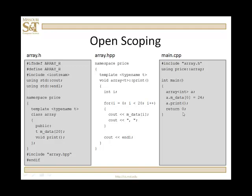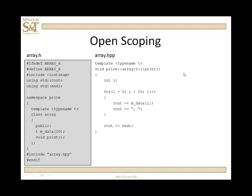Here I have a templated array class defined inside the price namespace. I'm using indirection — I'll pound-include array.h to get the implementation of the templated code for the print function, which is also in the price namespace. Over in main, I pound-include array.h and tell the compiler I'm using the price array. Then when I refer to array, it knows which array to grab. Alternatively, the HPP file can simply specify that this is for the price array print function, which satisfies the compiler.